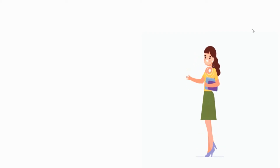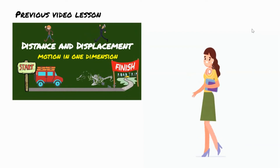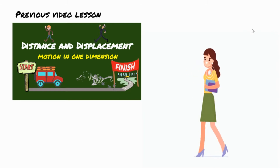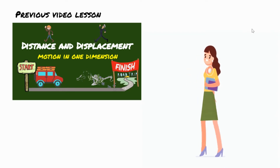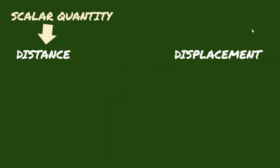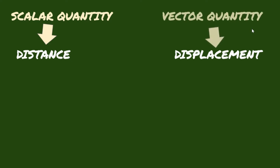Hi, learners! In our previous video lesson, we learned about distance and displacement. If you haven't watched it yet, you can pause this video and watch that one first to better understand our new topic today. We learned that distance is a scalar quantity, which means it is a measurement that has magnitude but without direction. On the other hand, displacement is a vector quantity, meaning it tells both magnitude and direction. So today, we will learn another type of scalar and vector quantities.